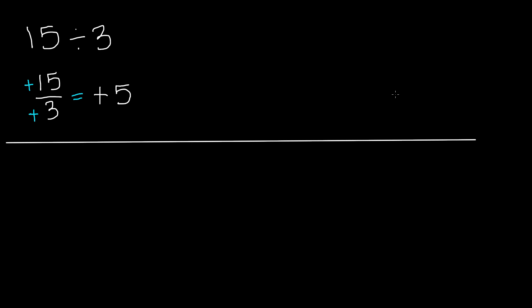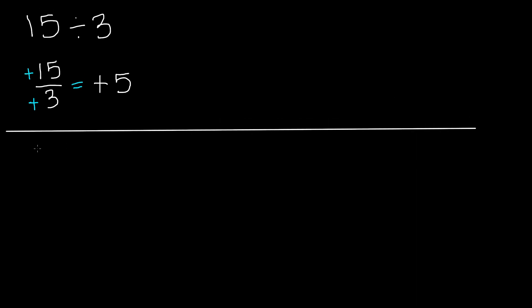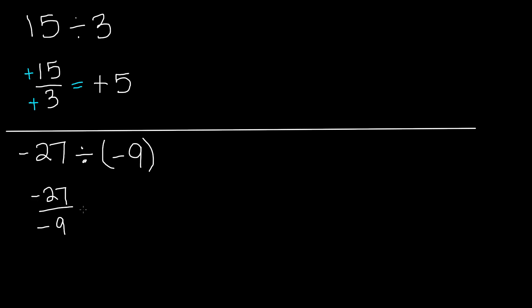Now let's do another problem. We have negative 27 divided by negative 9. We're dividing a negative by a negative, so let's put this in fraction form: negative 27 over negative 9. Remember, when you divide two integers with the same signs, you get a positive quotient. When you divide 27 by 9, you get 3. So our quotient is positive 3.